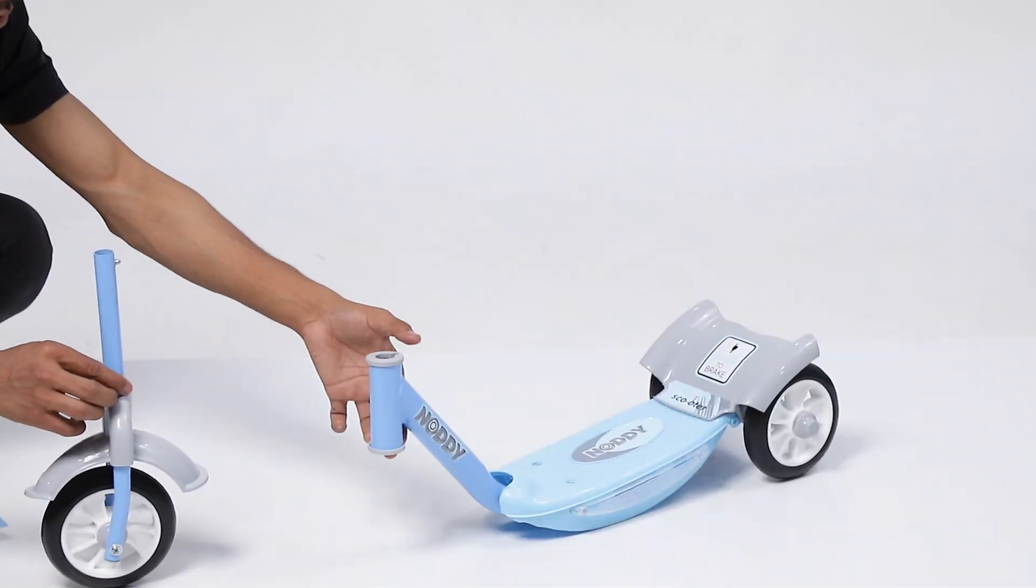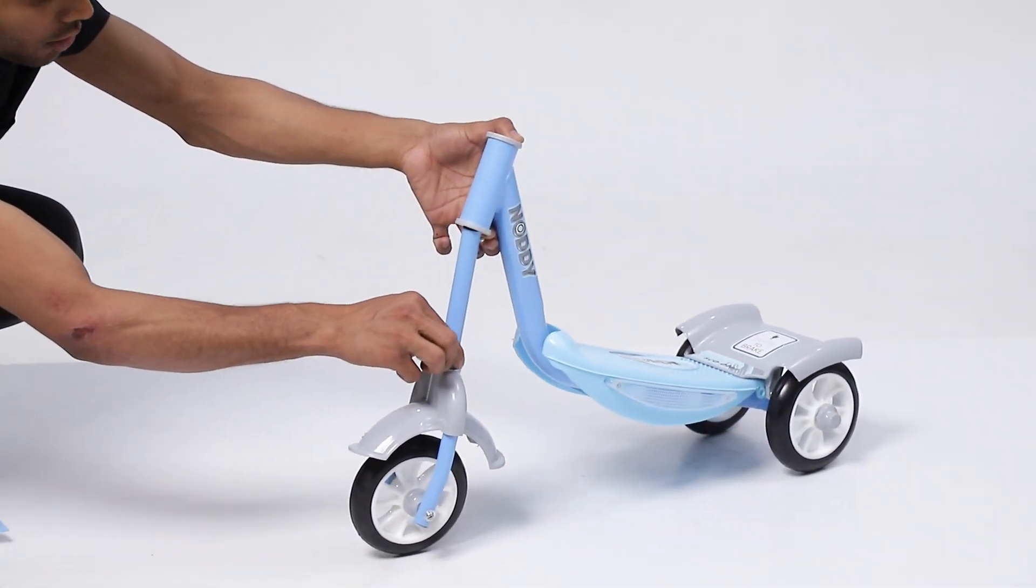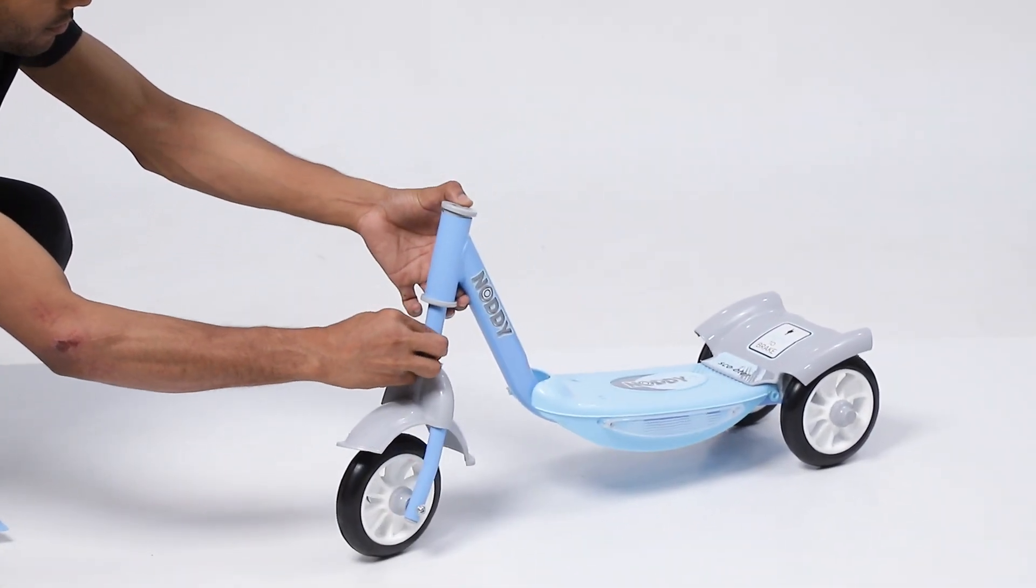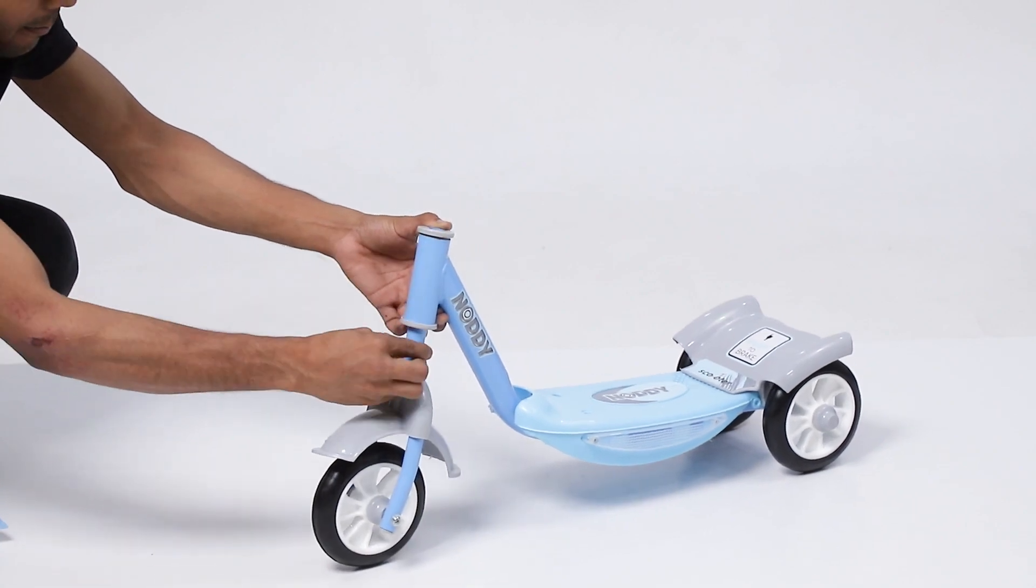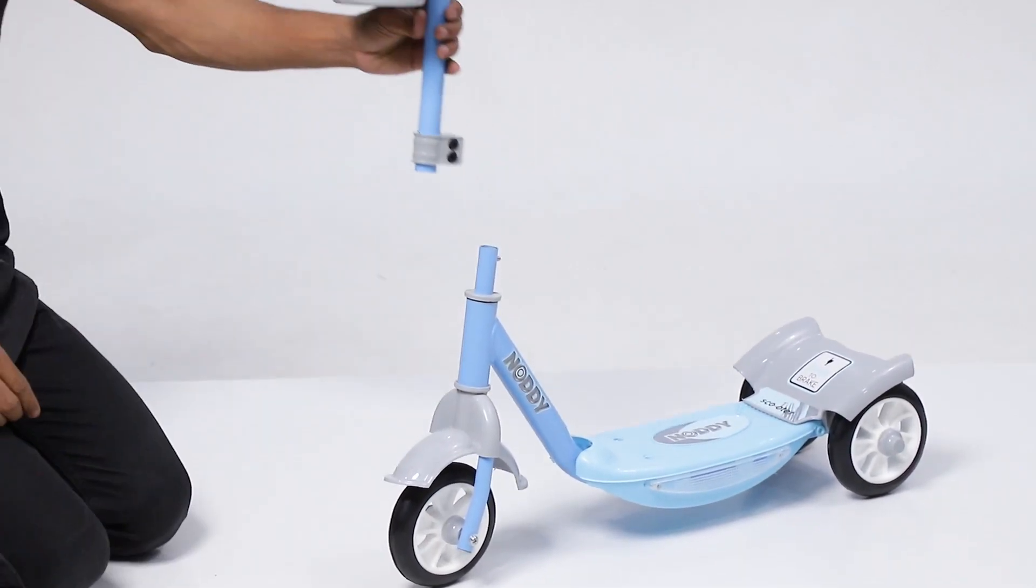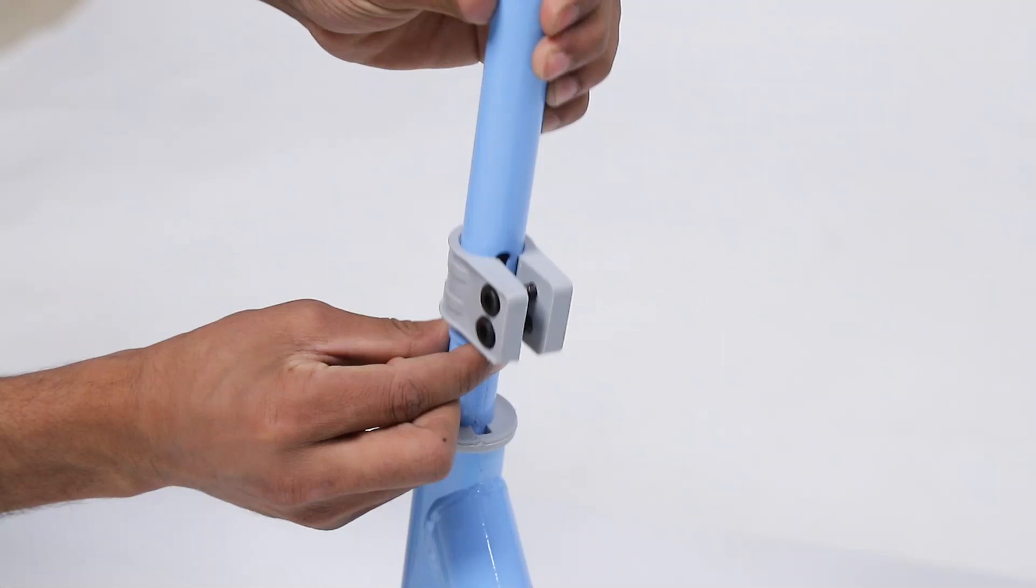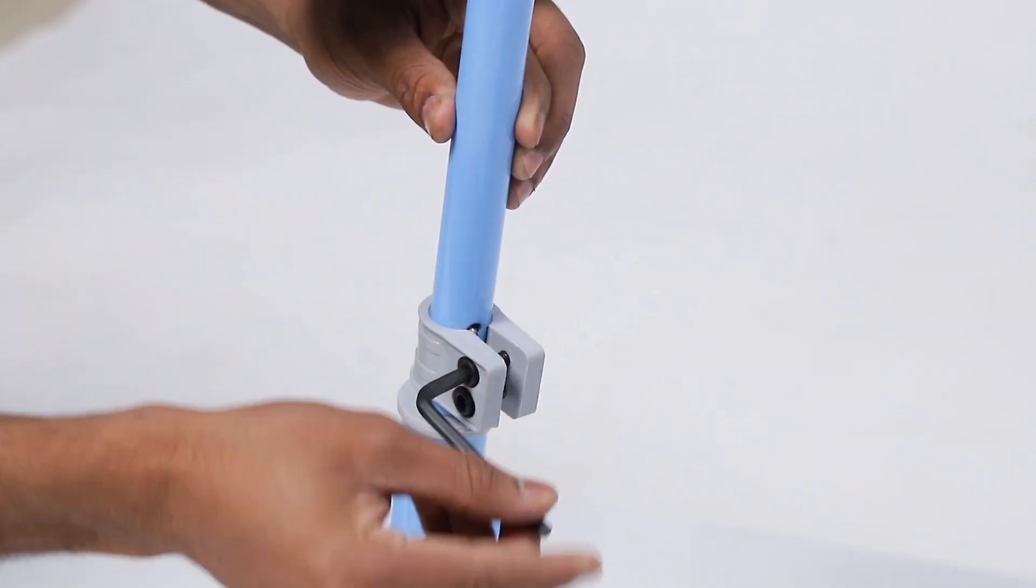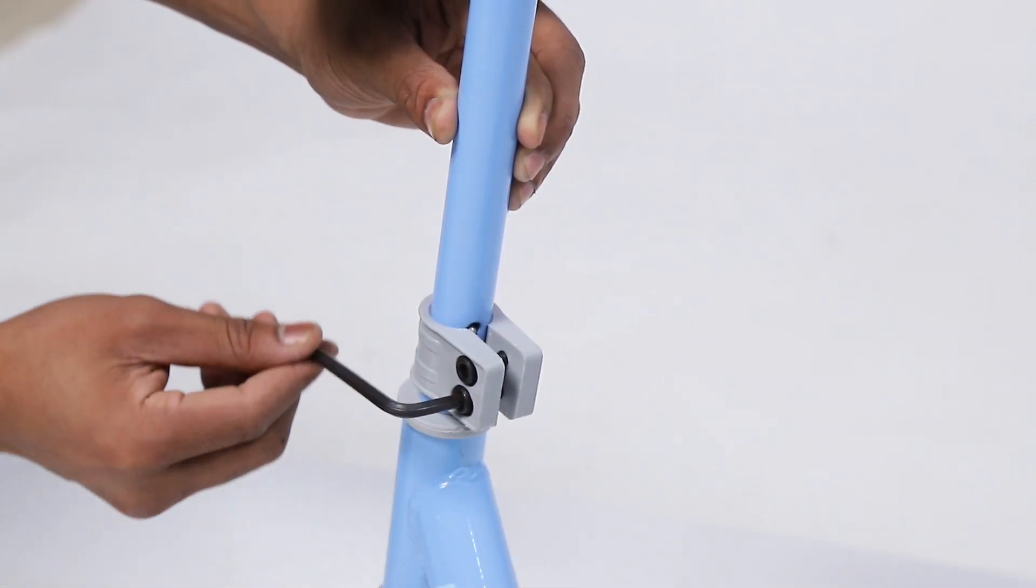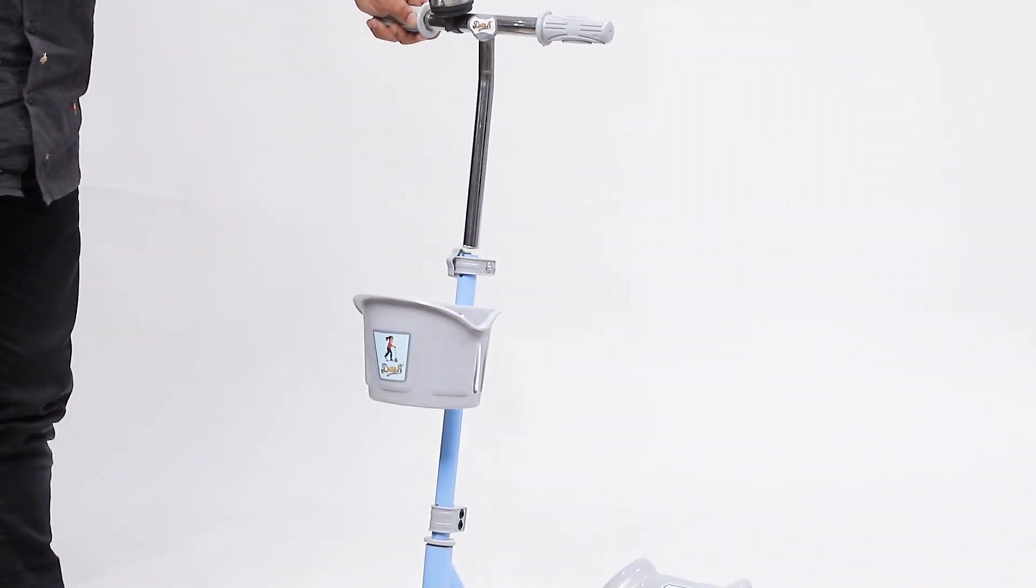To start with, take the main body and place front fork to the main body. Place bottom pipe to main body and lock it with the help of L-key given in the product. Now place handle pipe to main body.